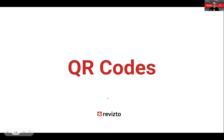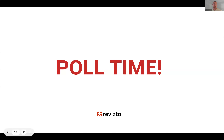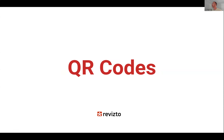There's another poll first — around custom statuses: what type of custom status workflow would you implement in your organization or project first? Most people are interested in improved clash statuses, with a few on the QA/QC and field-related statuses as well. So improved clash statuses is the popular one — good to know.